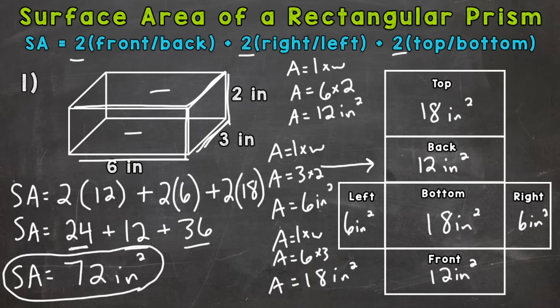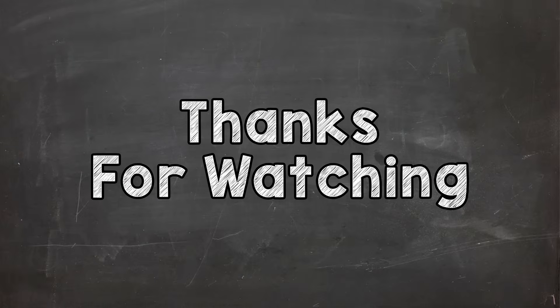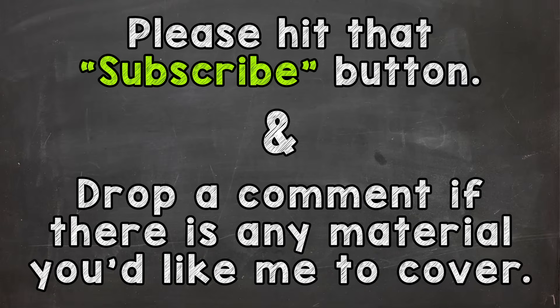So there you have it. There's how you find the surface area of a rectangular prism. Again, find the area of each face and then add all of that together. I hope that helped. Thanks so much for watching. Until next time, peace.